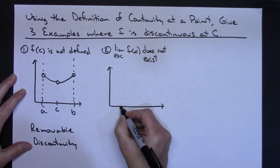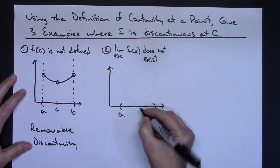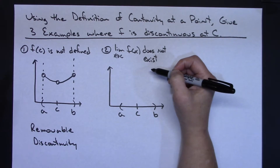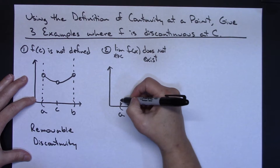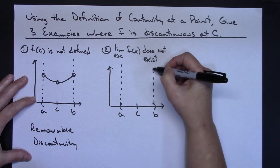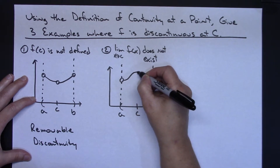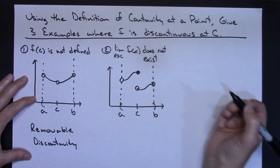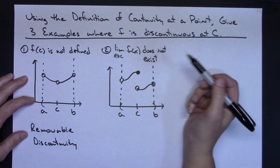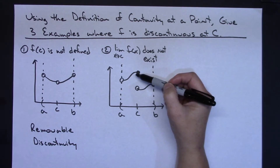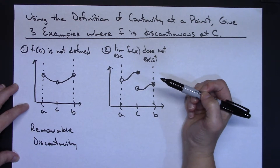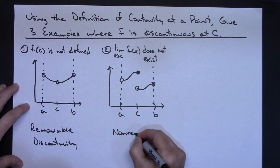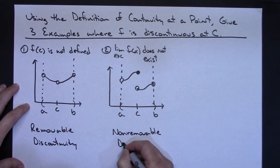Considering the open interval from a to b, my value of c occurs somewhere in the center. For the limit not to exist, the easiest way is when the limit from the left and the limit from the right are not equal. So I might have the limit coming from the left at one value and from the right at a different value — clearly showing a jump. This would be called a non-removable discontinuity because I cannot repair it.